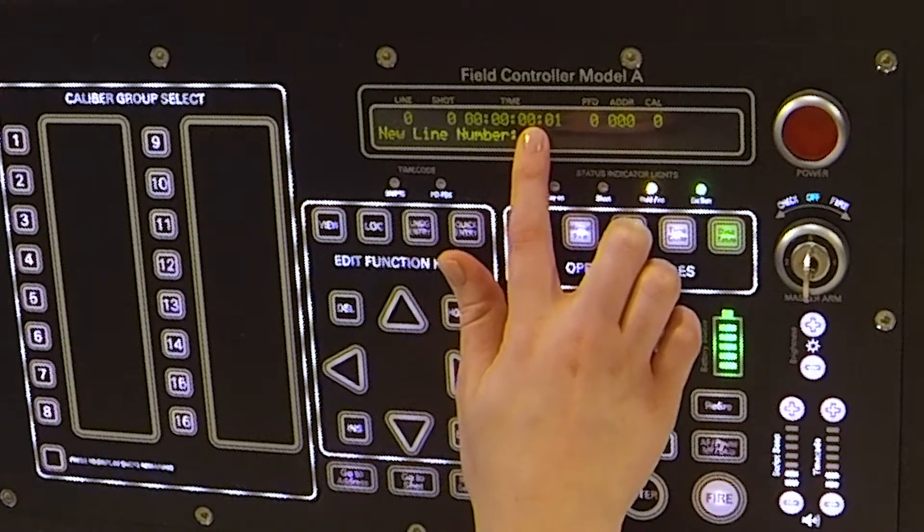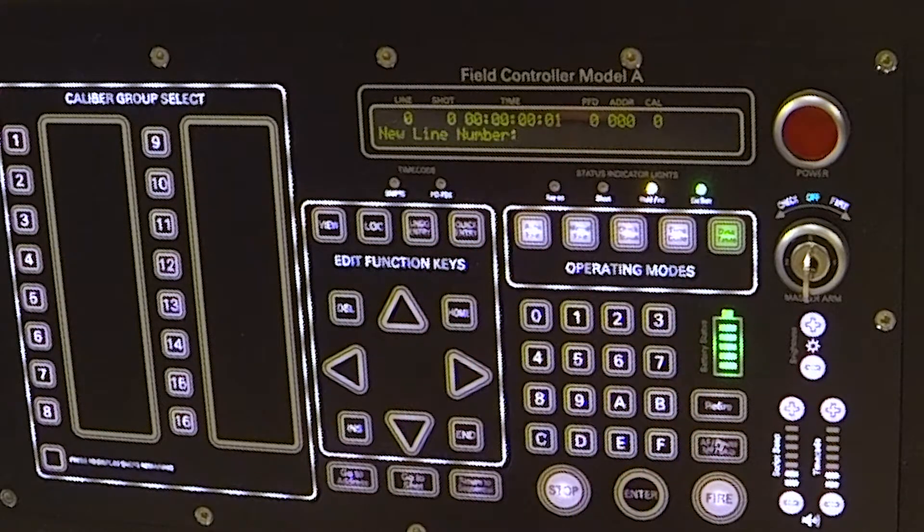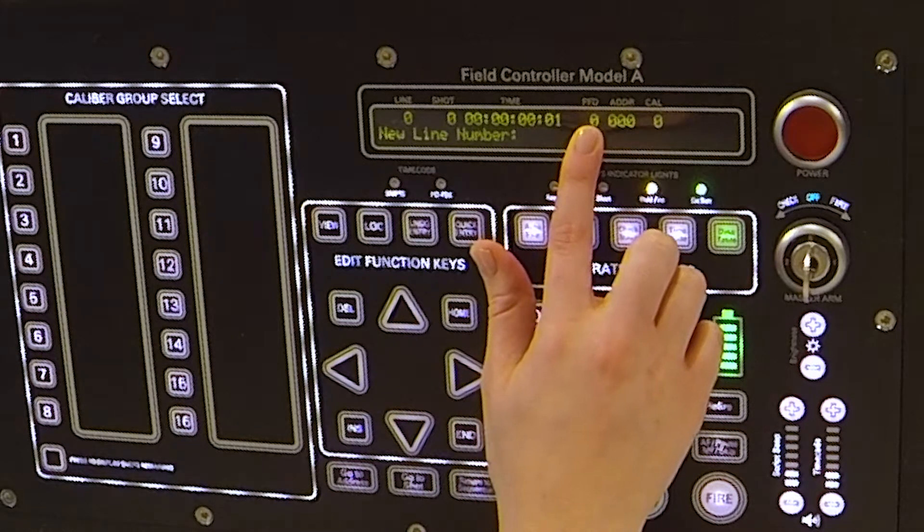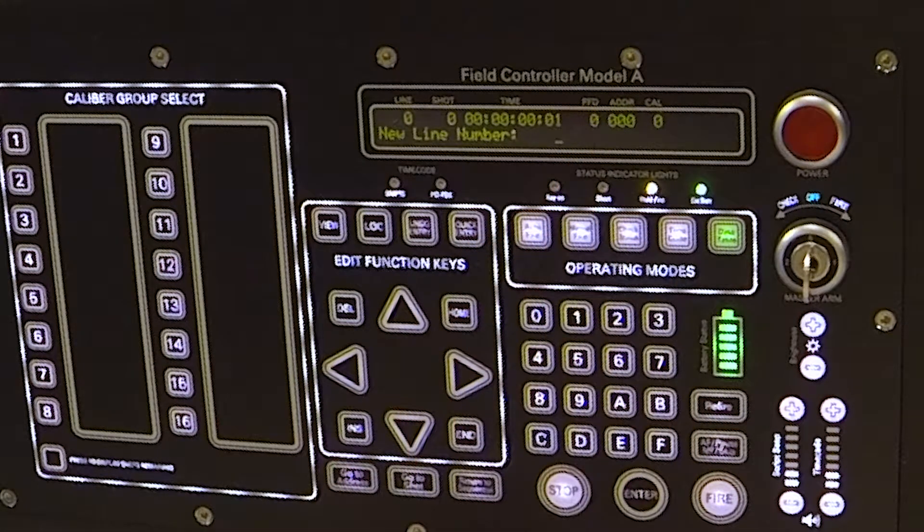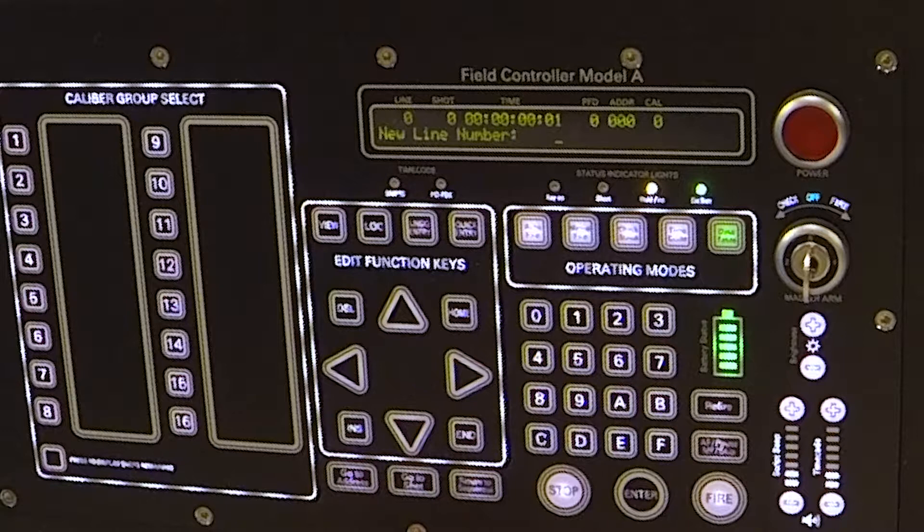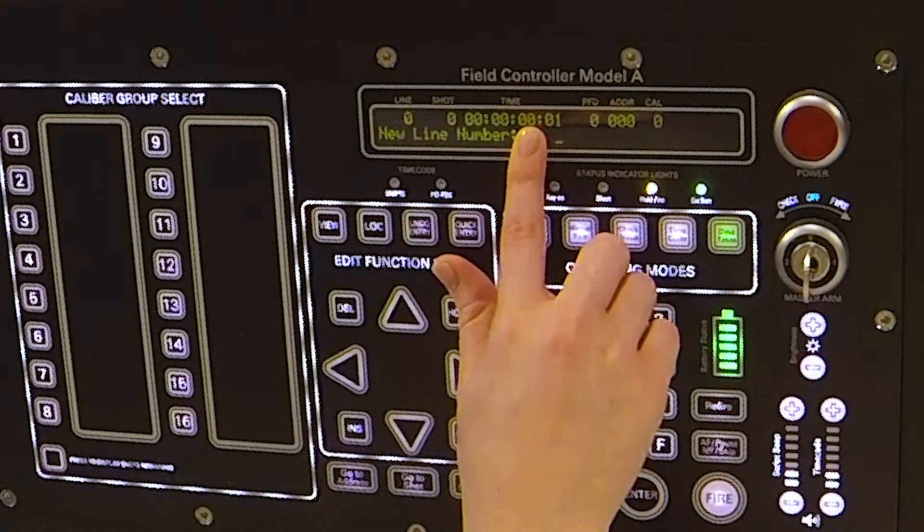Then you have the show time, which tells the field controller when the effect will be seen. Sometimes it can be the same as the fire time, but in most cases you have to fire earlier. For example, if you want to fire a shell, you have to fire it earlier in order to have enough time to let it rise in the sky and unfold its bouquet. Therefore, we have the pre-fire time, which tells the field controller when exactly to fire in order to see the effect in the show time.